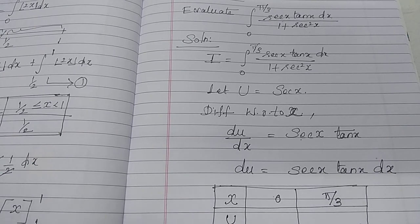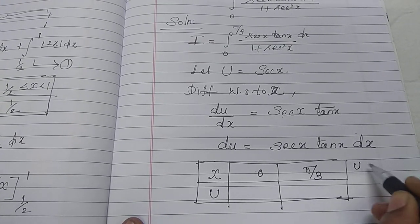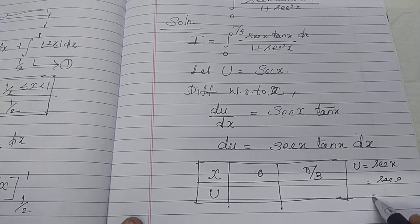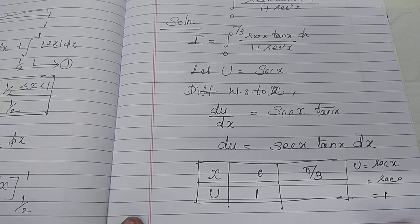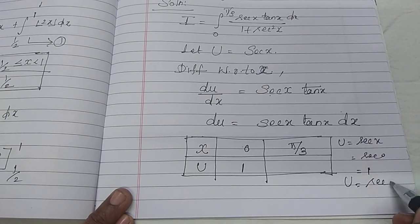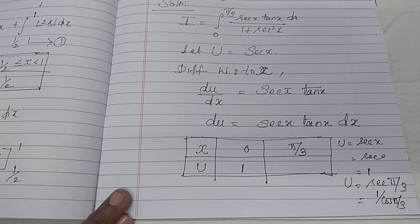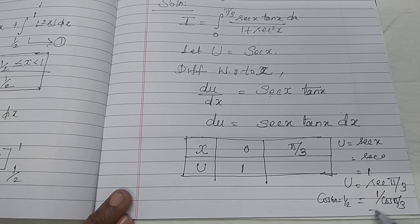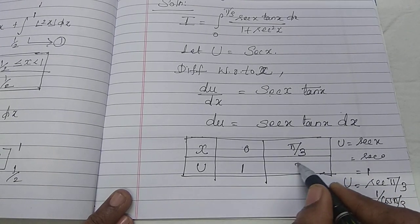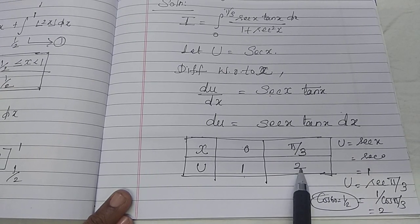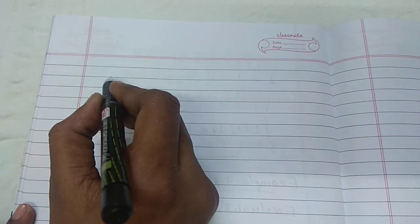Since our variable is now u and u equals sec x: for the lower limit, u equals sec 0 equals 1/cos 0 equals 1. For the upper limit, u equals sec(π/3) equals 1/cos(π/3) equals 1/cos 60°. Since cos 60° equals 1/2, this value is 2. Therefore u takes values from 1 to 2.